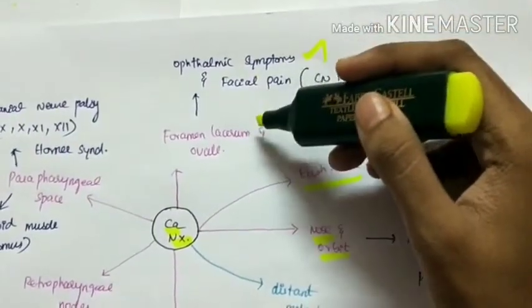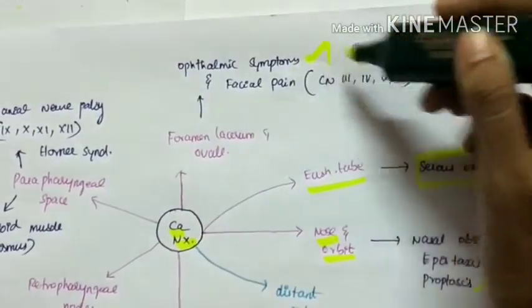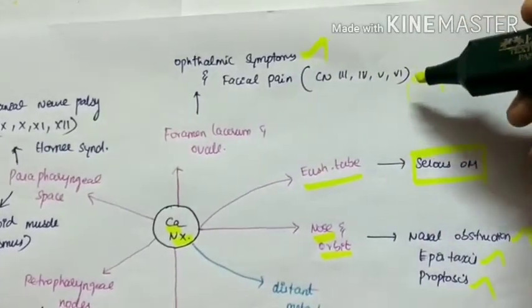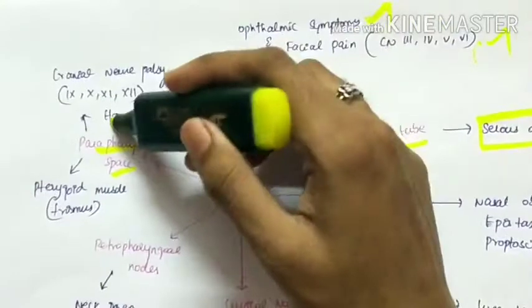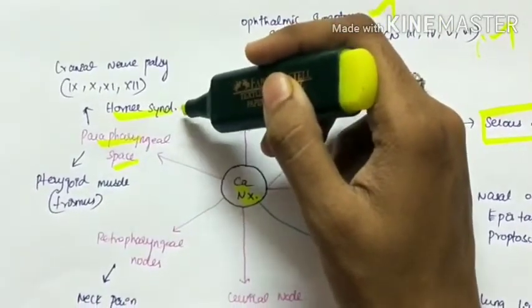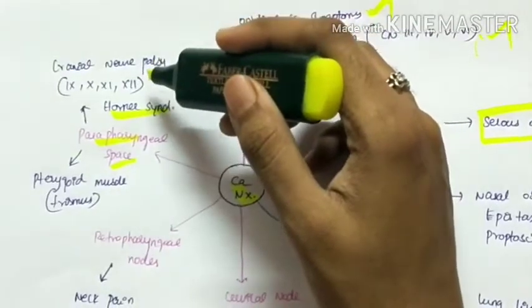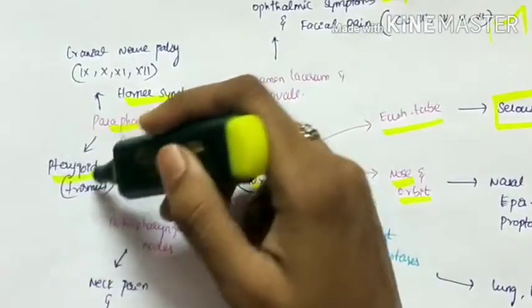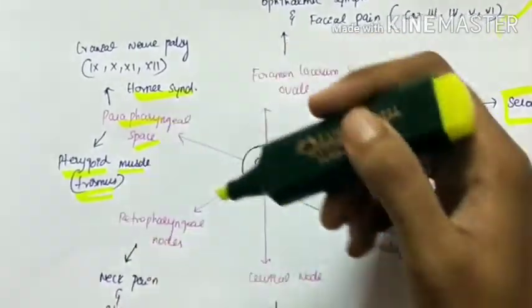It enters into the middle cranial fossa of the skull where it causes ophthalmic symptoms and facial pain due to involvement of cranial nerves 3, 4, 5, and 6. It can enter the parapharyngeal space producing Horner syndrome due to involvement of sympathetic chain, and cranial nerve palsy involving 9, 10, 11, and 12 cranial nerves. It can also involve the pterygoid muscle producing trismus, that is locked jaw.